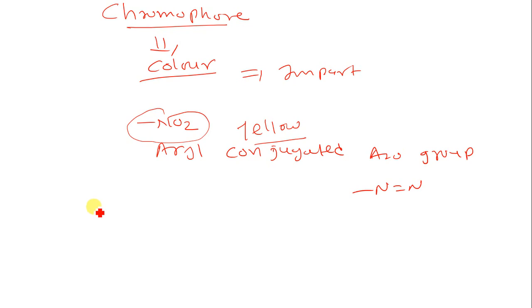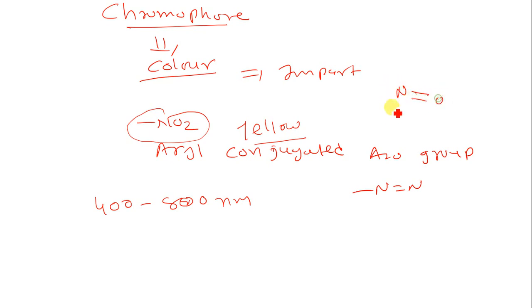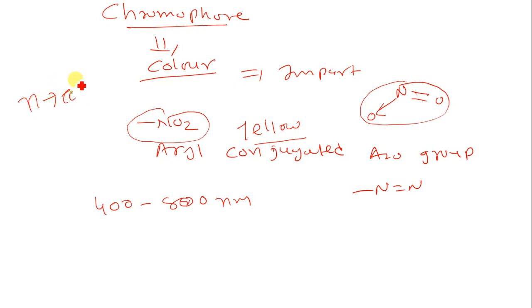Chromophore generally appears in the range of 400 to 800 nanometers. It is defined as any isolated covalently bonded group that shows characteristic absorbance in the ultraviolet or visible region. When a nitro group is attached covalently in an isolated system and imparts color, it is known as a Chromophore. There are mainly two transitions in a chromophoric group: N to Pi Star and Pi to Pi Star.